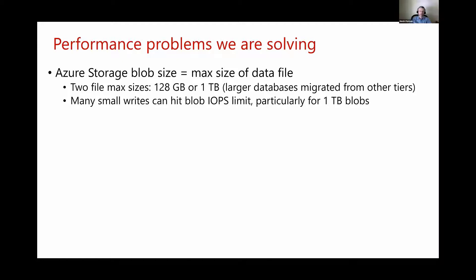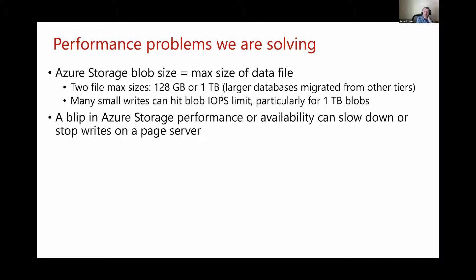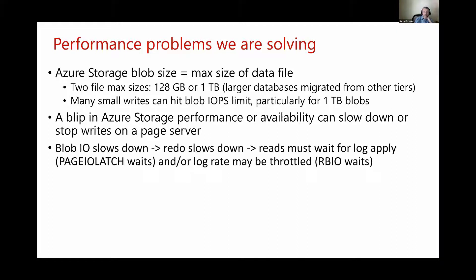A related problem is that a blip in storage performance or availability can slow down or sometimes stop writes from page server to the blob. In both cases, when blob IO slows down, redo on the page server slows down as well — new pages are not getting applied to RBPX cache or buffer pool on the page server fast enough. Any read from the page server must then wait for log apply, which manifests as PAGEIOLATCH on compute — it looks as if storage is very slow, which it is. Another manifestation is log rate throttling: if a page server falls more than one gigabyte behind because of this, the log rate will be throttled.